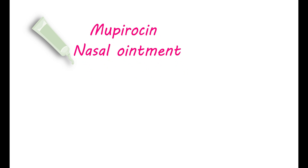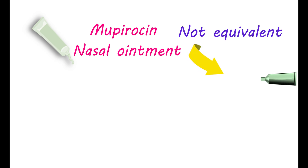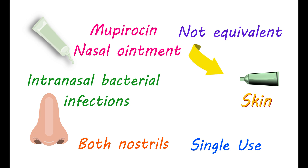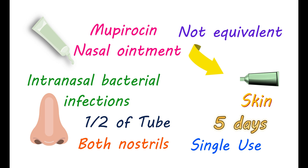Mupiracin nasal ointment should be used in a different way. Even though the Mupiracin is present at equal strength, it is not equivalent to ointment intended for use on skin. For treating intranasal bacterial infections, you should apply Mupiracin intranasal ointment into both nostrils. It is a single-use ointment and you have to apply half of the tube to each nostril. Gently close and open each nostril to spread the ointment. It can be used for 5 days to eradicate bacterial colonies in the nostrils.